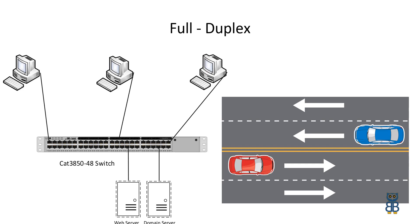Full-duplex is also called two-way or bidirectional communication. It allows communication in both directions simultaneously. It divides the available channel into two parts — one to send data and the other to receive data — so a device can perform both tasks at the same time. A two-way highway is an example, and a switch operates at full-duplex mode.